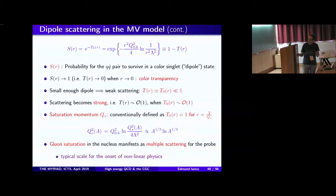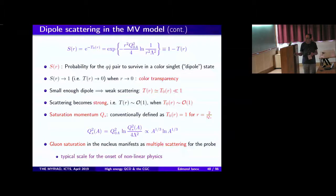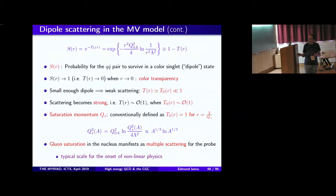Replacing r by 2/Q_s and setting the exponent equal to one gives an equation for Q_s: Q_s squared is set by Q0-squared times a log factor, because replacing 1/r-squared by Q_s-squared introduces a log. So Q_s essentially scales like A to the one-third. It's slightly bigger than Q0 because the log is bigger than one — the saturation scale is a semi-hard scale bigger than lambda-QCD. In the MV model, the saturation scale scales as A to the one-third times a log.